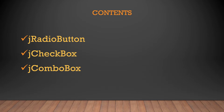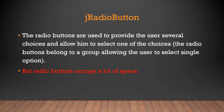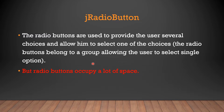First is JRadioButton. Radio buttons are used to provide the user several choices and allow them to select one. The radio buttons belong to a group, allowing the user to select only a single option. If the user selects one and then selects another option, the previous option will be deselected.